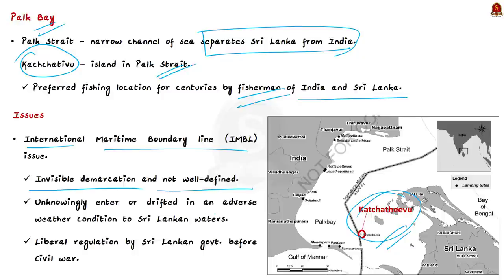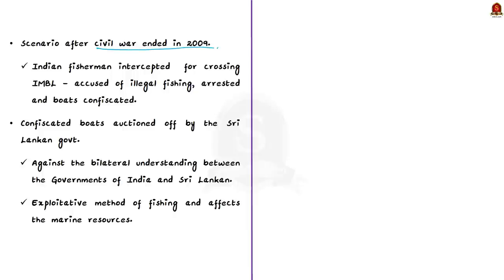The issues started with the demarcation of the international maritime boundary line, which is IMBL. IMBL is an invisible demarcation and is still not well defined. Indian fishermen will not know when they cross the invisible line and enter Sri Lankan waters. They may also be drifted to Sri Lankan water in adverse weather conditions. After the civil war ended in 2009, when Indian fishermen crossed IMBL they were intercepted by the Sri Lankan navy and accused of illegal fishing, arrested, and their boats were confiscated.